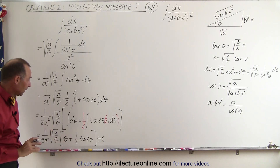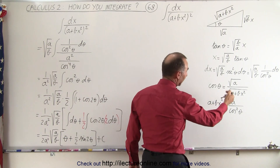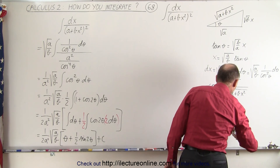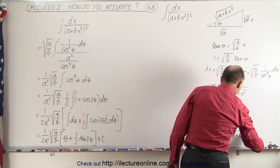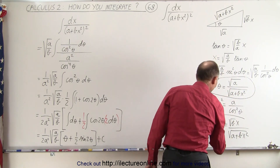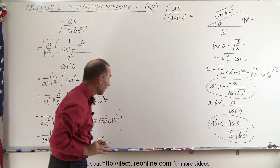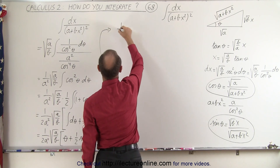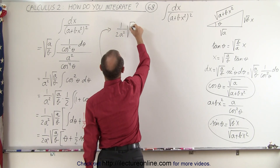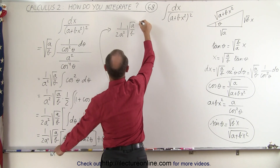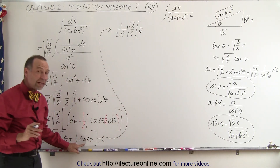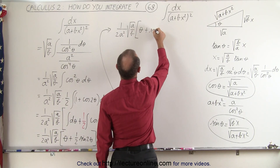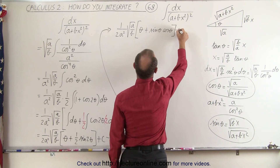We don't have a direct expression for the sine of 2 theta, but we do have expressions for the cosine of theta and the sine of theta — the sine of theta equals the opposite side, which is the square root of B times X, divided by the hypotenuse. Using a trigonometric identity, the sine of 2 theta can be written as twice the sine of theta times the cosine of theta; the 2 cancels with the 1 half, so we end up with plus the sine of theta times the cosine of theta, plus the constant of integration.